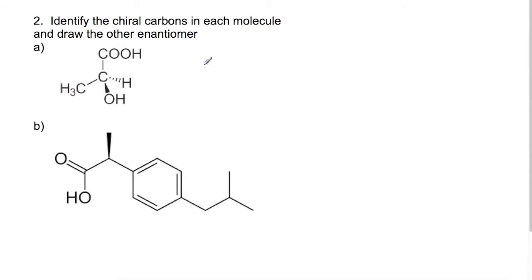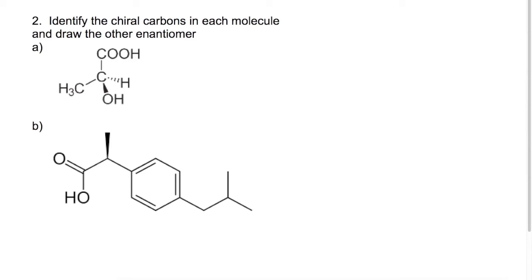Looking now at optical isomers — you've been asked to identify the chiral carbon in each molecule. I'm going to highlight the chiral carbon in pink. For the first molecule, it is the carbon in the middle where we have four different groups attached. For the second molecule, we need to work out which carbon has four different groups. We have a CH₃ and a CH₃ so they're not chiral carbons; this carbon has two CH₃ groups, this one has two H's. So the chiral carbon must be the one with a bond to the benzene ring, a bond to a CH₃, a bond to an H, and a bond to the carboxylic acid group.